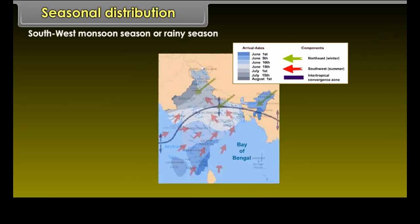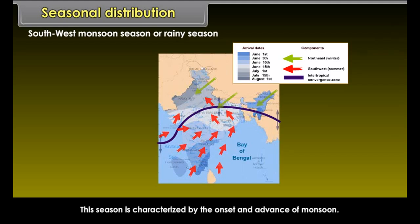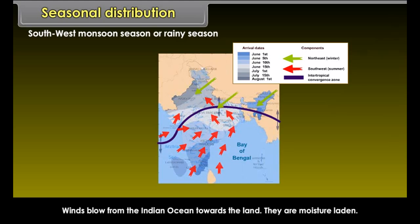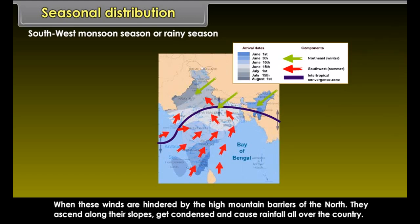The southwest monsoon season or rainy season is characterized by the onset and advance of monsoon. Winds blow from the Indian Ocean towards the land and are moisture-laden. When these winds are hindered by the high mountain barriers of the north, they ascend along their slopes, get condensed, and cause rainfall all over the country.